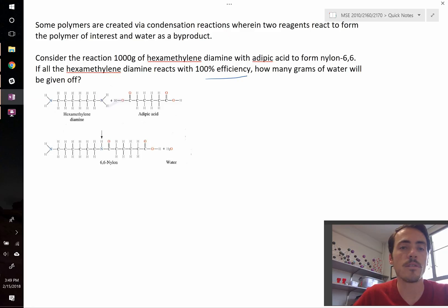That means all we need to do is figure out how much hexamethylene diamine is required for every amount of water that's created.